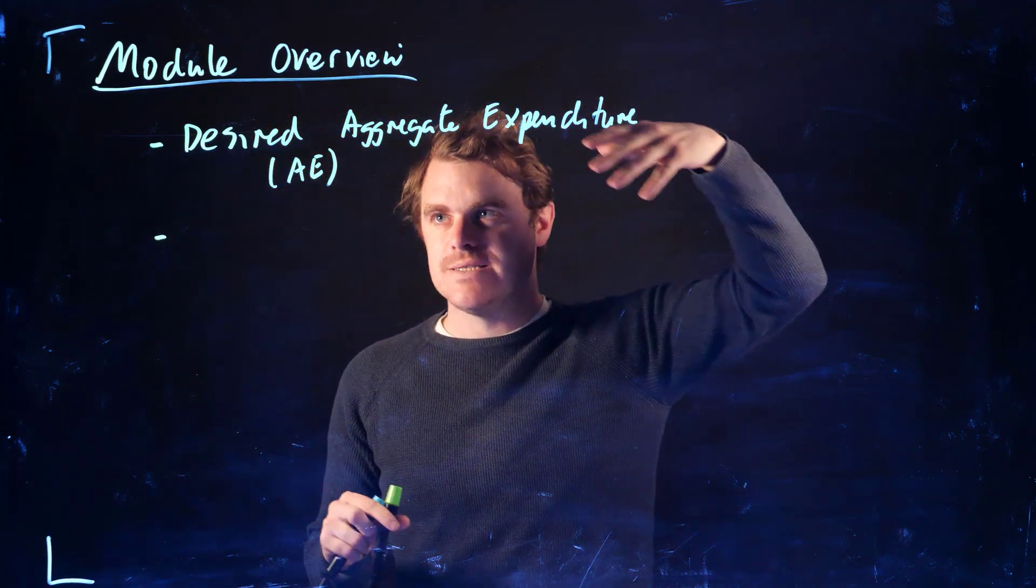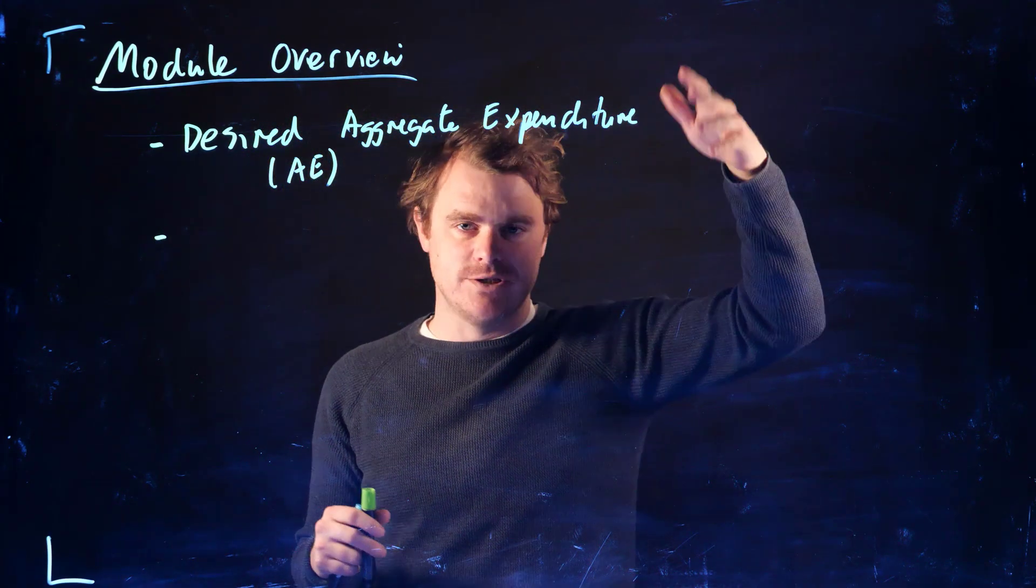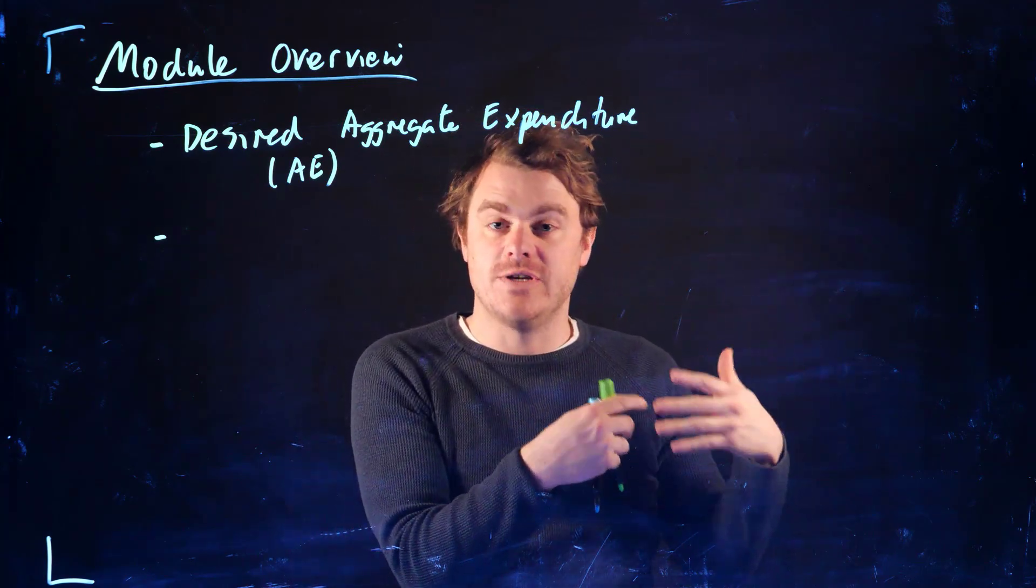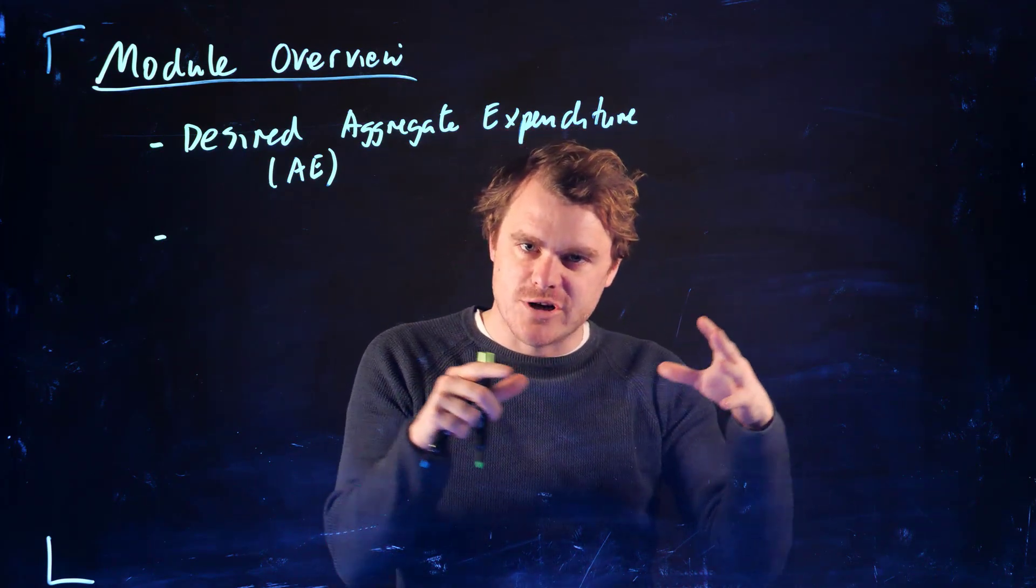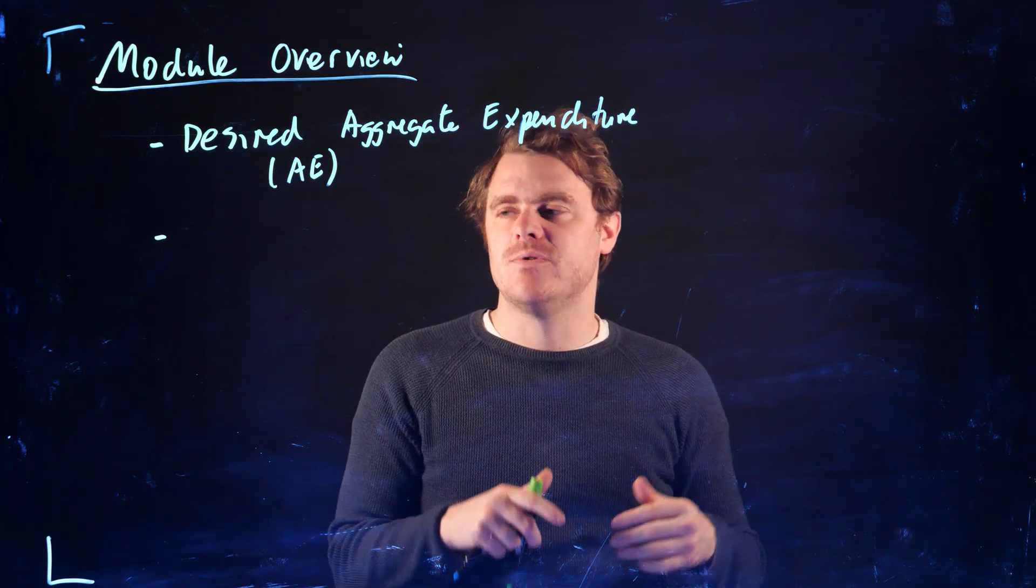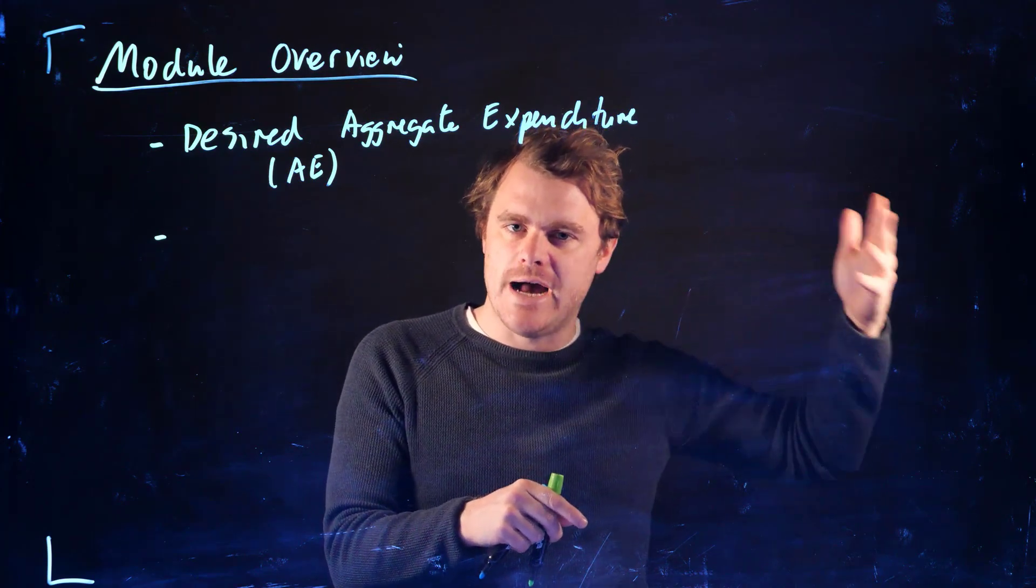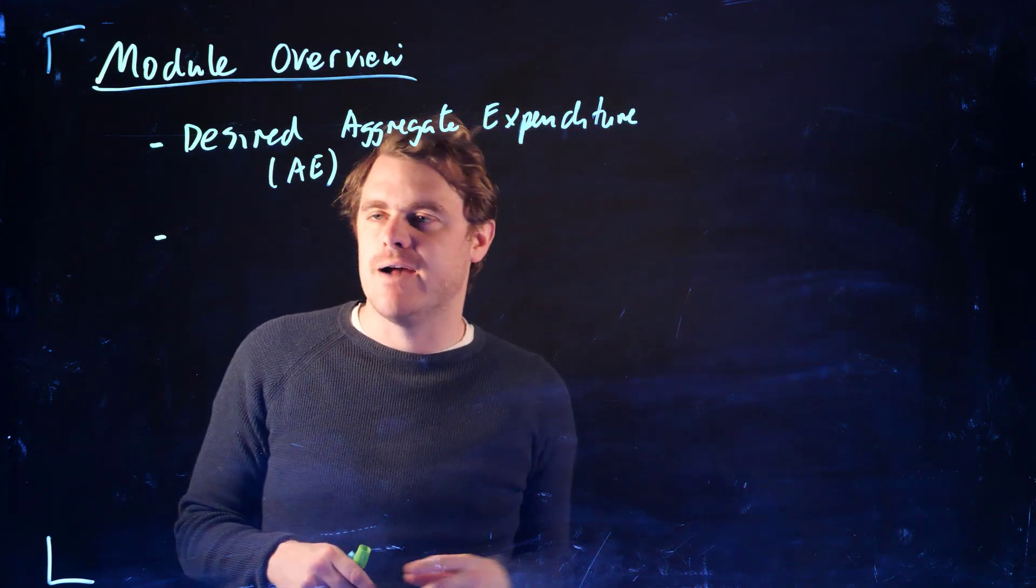We're going to talk about the different components of desired aggregate expenditure, what shifts the desired level of expenditure in our economy around. We're going to concentrate on just consumption and investment when we do this. Then next week, we'll add foreign trade and government purchases.